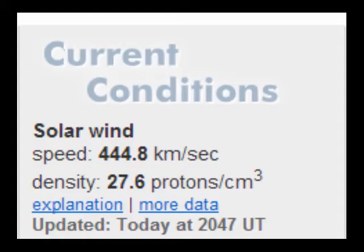The solar wind speed is currently 444.8 kilometers per second. The density is 27.6 protons per cubic centimeter.